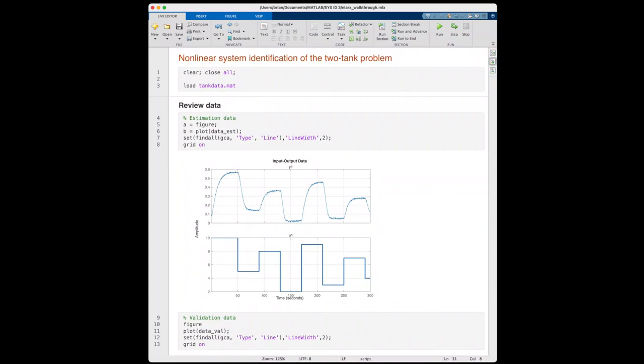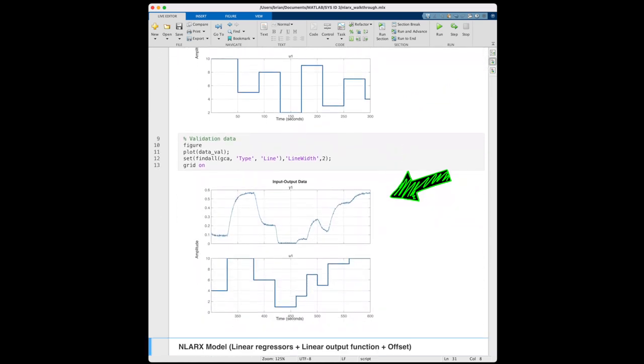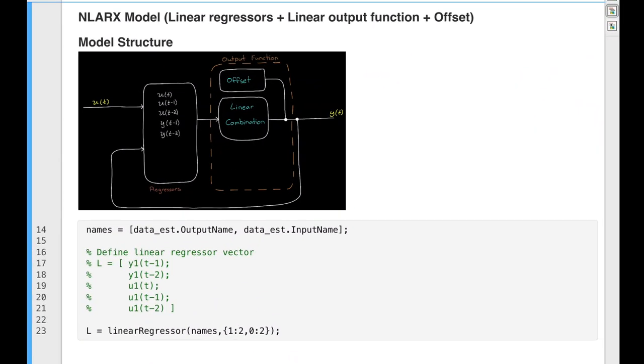To start, I'm loading in the two-tank dataset, that's this estimation data and the validation data we saw earlier. Now, I'm going to fit a non-linear ARX model to this estimation data. In this case, our non-linear model has linear regressors, a linear output function, and the non-linear offset term. I'm defining the linear regressor vector L to match the model we wrote out earlier. The regressor vector will be the past two outputs, and the current and past two inputs.